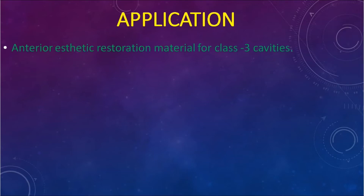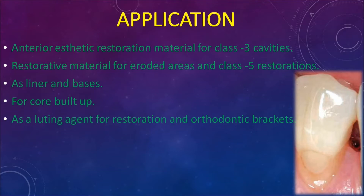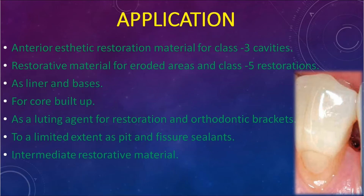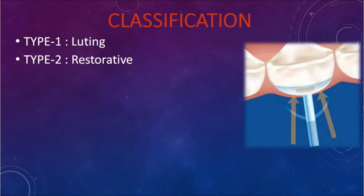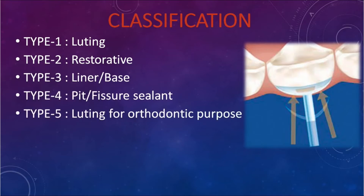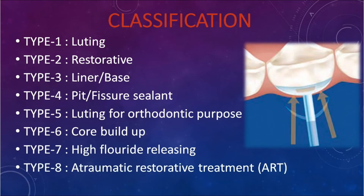Applications: anterior aesthetic material for Class 3 cavities; restorative material for eroded areas and Class 5 restorations; as liner and bases; for core buildup; as luting agent; and to a limited extent as pit and fissure sealants. Classification: Type 1 – luting; Type 2 – restorative; Type 3 – liner or base; Type 4 – pit and fissure sealant; Type 5 – luting for orthodontic purposes; Type 6 – core buildup; Type 7 – high fluoride releasing; Type 8 – atraumatic restorative treatment; Type 9 – pediatric GIC.